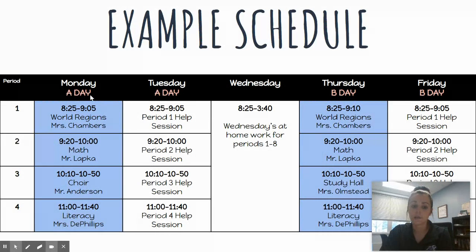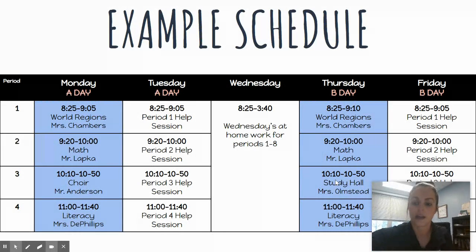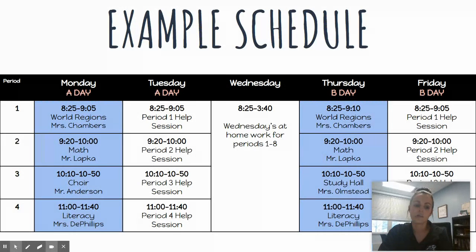Same as our hybrid schedule, A days are on Mondays and Tuesdays and B days are on Thursdays and Fridays. This specific student has an A day class — choir with Mr. Anderson — which meets on Mondays with the help session on Tuesdays for third period A day. They have study hall with Ms. Olmsted on Thursdays, which is their B day, and their help session is on Friday, which is that third period B day. A day and B day classes include PE, health, choir, band, study hall, and core plus more — those primarily follow that A day/B day schedule.